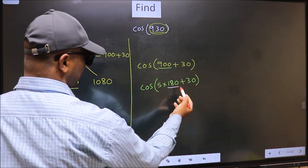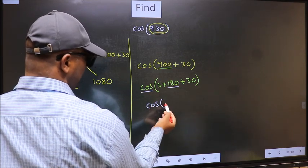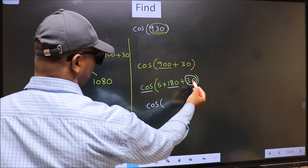Next, here we have 180. So cos is not going to change. It will remain cos. And inside, we get this angle 30.